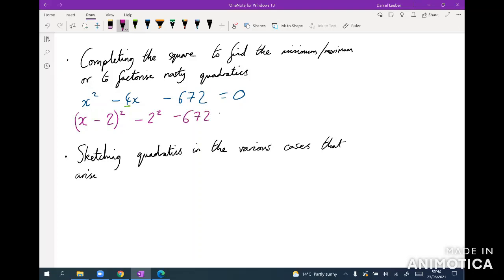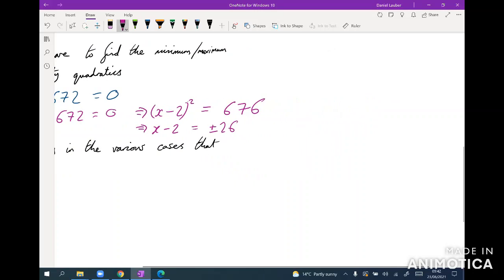Minus 672, we leave that thing alone, equals 0. And so now we've got x minus 2 squared equals 676, which actually is just 26 squared. So we've very quickly got the idea that x minus 2 equals plus or minus 26, and so x equals 28 or minus 24.